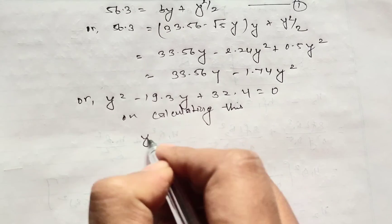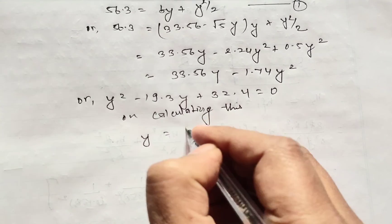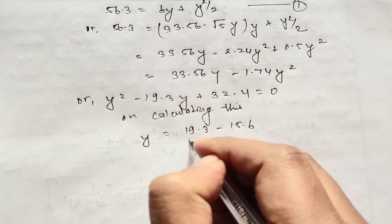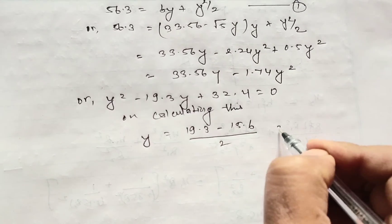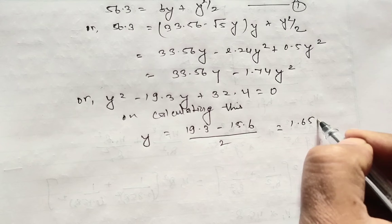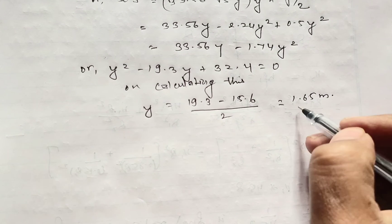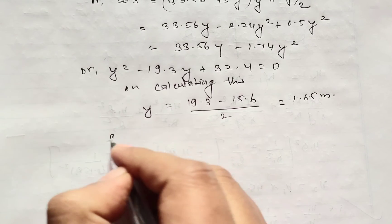The value of Y will be 19.3 minus 15.6 divided by 2, which equals 1.65 meter. This is the value of Y.